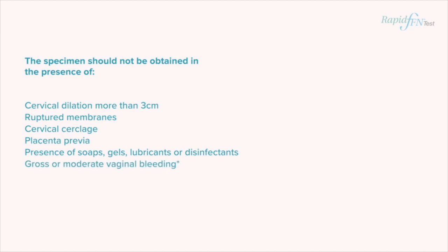Care must be taken not to contaminate the swab or cervicovaginal secretions with lubricants, soaps, disinfectants or creams. These substances can interfere with absorption of the specimen by the swab or with the antibody-antigen reaction of the fetal fibronectin test. It is important to remember that moderate or gross vaginal bleeding is an independent risk factor for preterm delivery and may be associated with other severe obstetrical or medical problems.